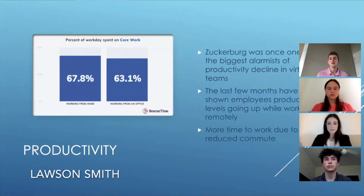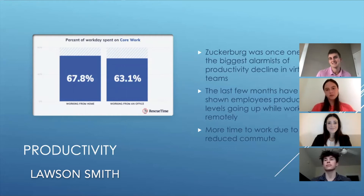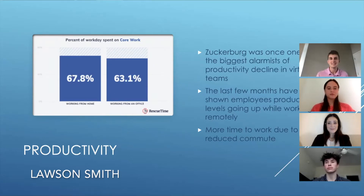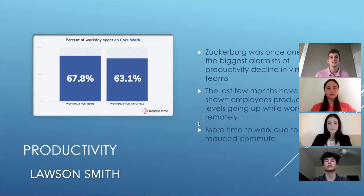Regarding productivity, Mark Zuckerberg was once a big proponent of the idea that productivity decreases when working from home — a theoretical concept thrown around in the tech world for a long time, which is partly why Facebook spent 750 million dollars on their office. But over the last few months, it's really been a great case study showing that productivity doesn't necessarily go down when working from home. People are equally motivated, getting just as much work done, and the graph on the left shows productivity from home versus in the office. This is no longer seen as a major drawback by Facebook.